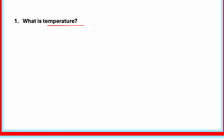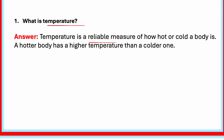What is Temperature? Temperature is a reliable measure of how hot or cold a body is. A hotter body has a higher temperature than a colder one. Every object can be hot or cold. To find how hot or cold something is, we measure its temperature. Temperature is a reliable way to know the hotness or coldness of a body. A hotter object has a higher temperature; a colder object has a lower temperature.